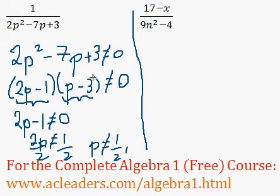What about over here? p minus 3 cannot equal 0, so p cannot equal 3. Those are the restricted values for p: one-half and 3.